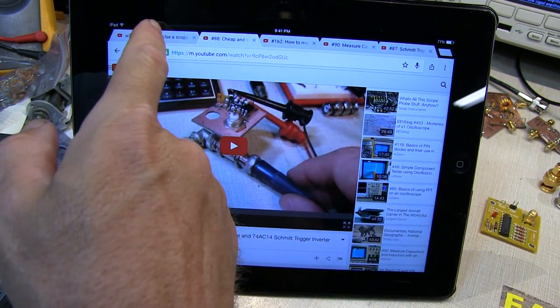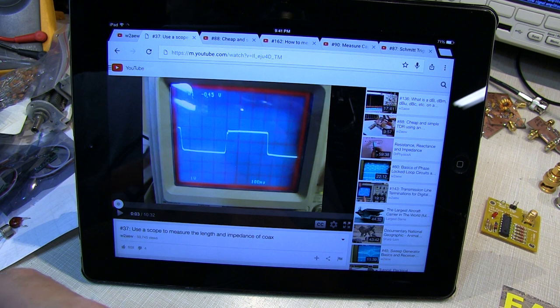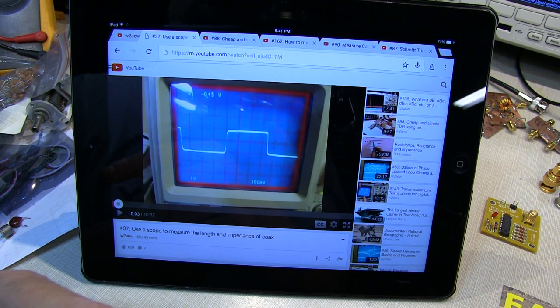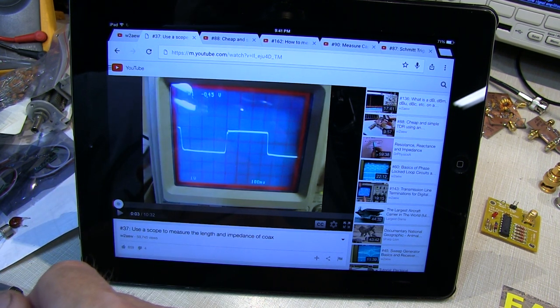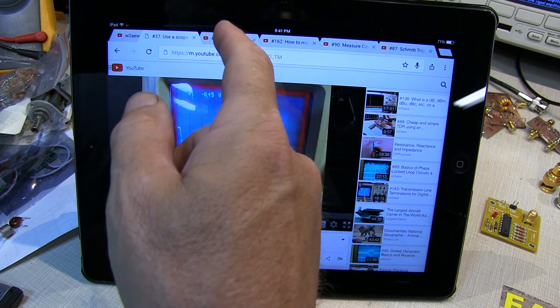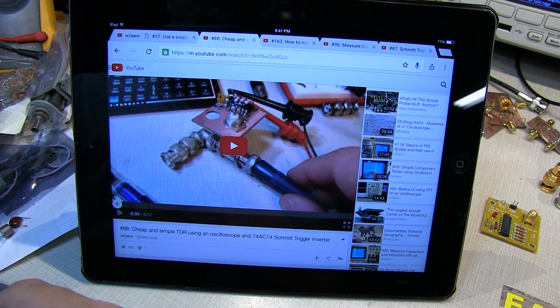I'd also done another video on TDRs using a signal generator, number 37, and of course the theory that was presented in that video is certainly applicable to what we're doing in video number 88 with this oscillator.